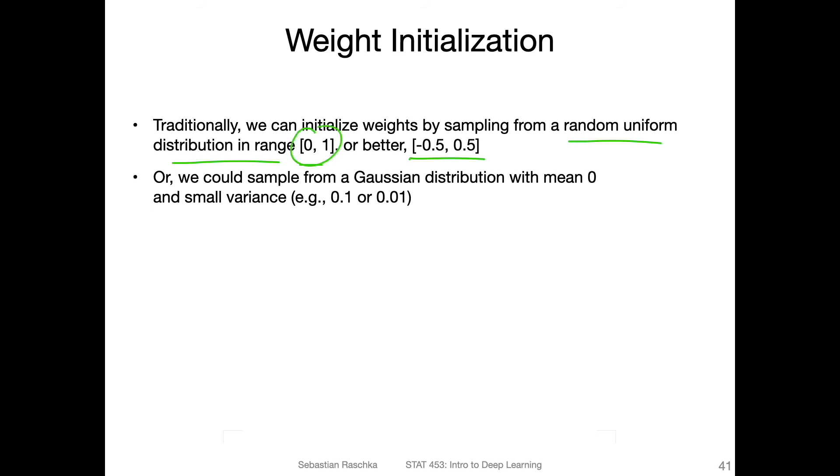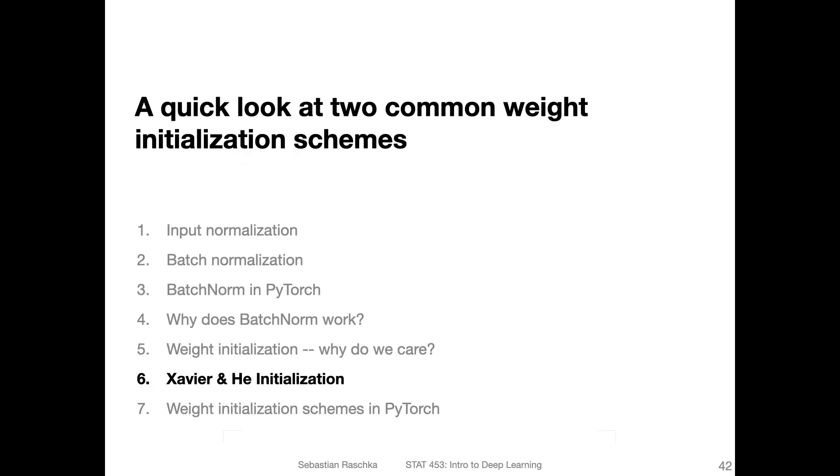You can also choose a positive range. If you have a ReLU function, it probably doesn't really matter that much. However, this gives you more combinations if your inputs are also negative and positive. What's very common is to initialize the weights from a random Gaussian distribution with mean zero and small variance. But these are just some suggestions that have been used in the past. Nowadays, it's actually more common to use either something like the Xavier Glorot initialization or Kaiming He initialization. We will talk about this in the next video.